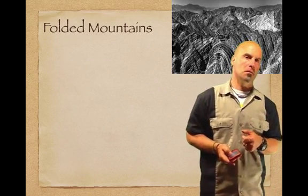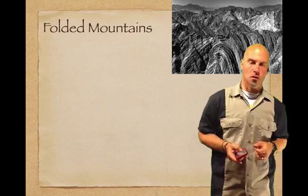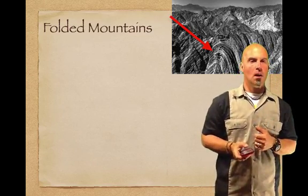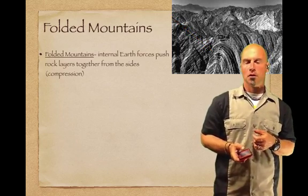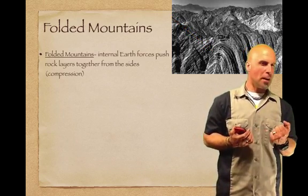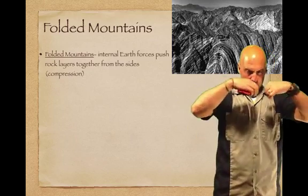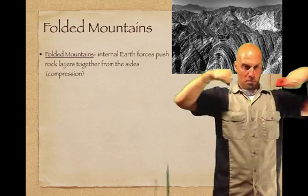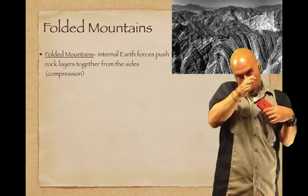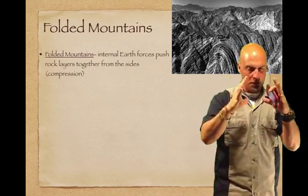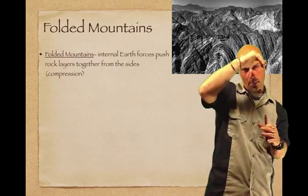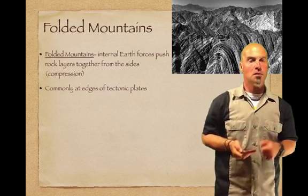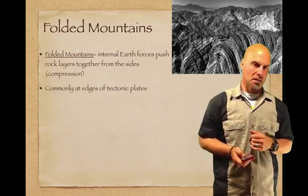Folded mountains — you can almost see them fold in the picture. Internal forces push the rock layers together from the sides through compression. You've got forces on either side pushing in toward the middle; the rocks have nowhere to go, so they go up. That's folded mountains — compressive force. These are commonly found at the edge of tectonic plates.